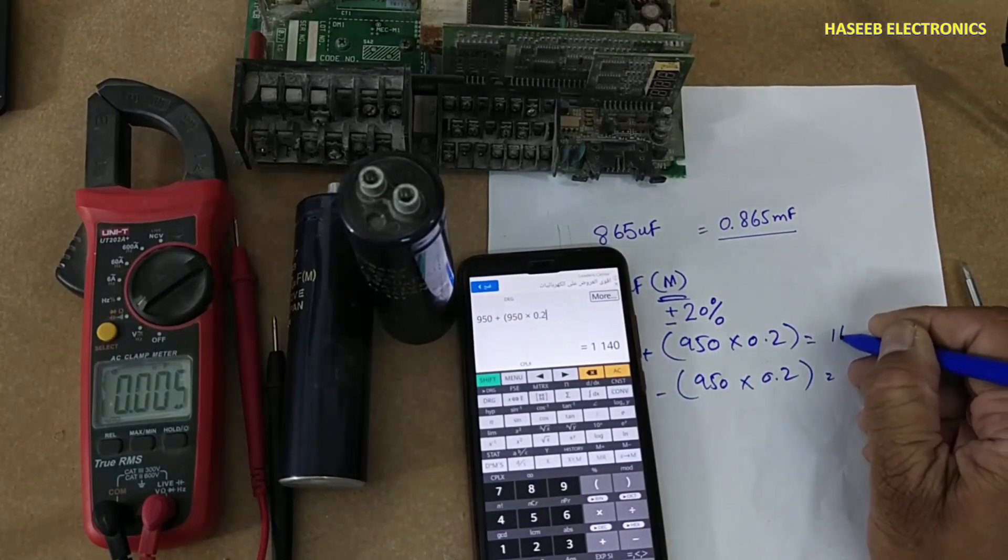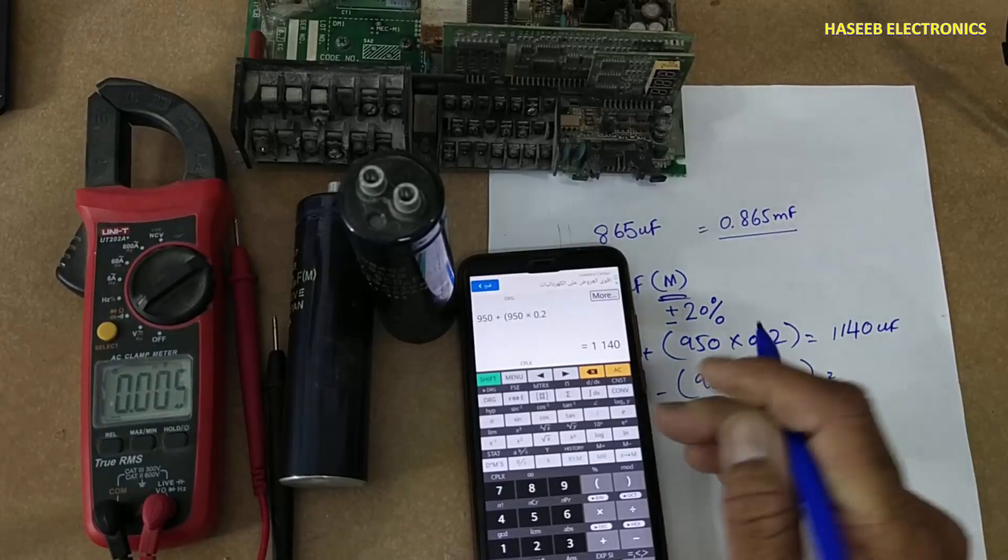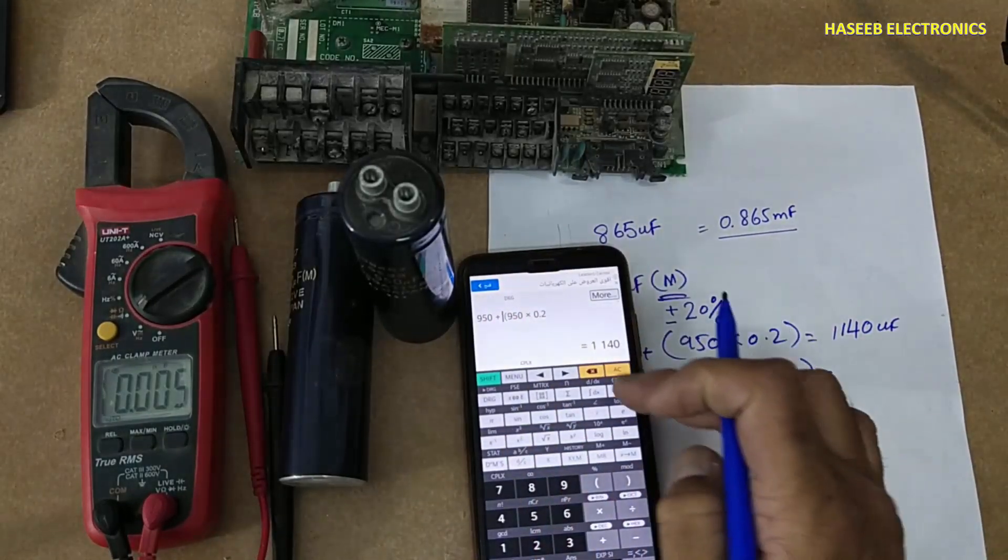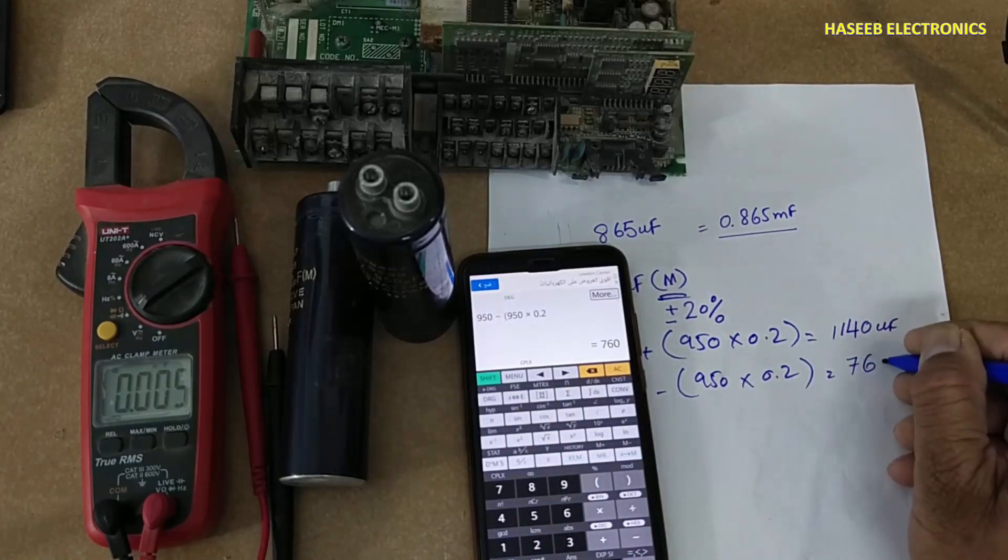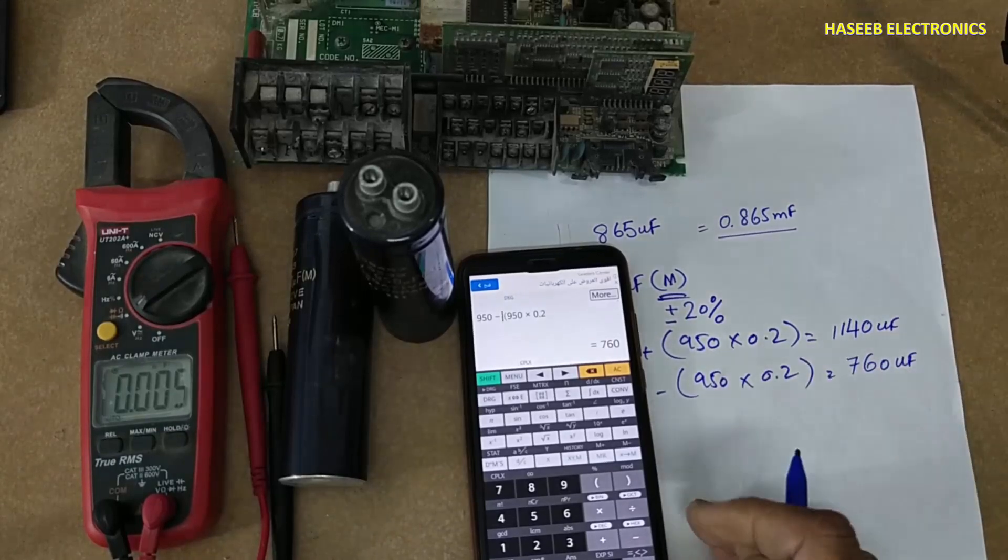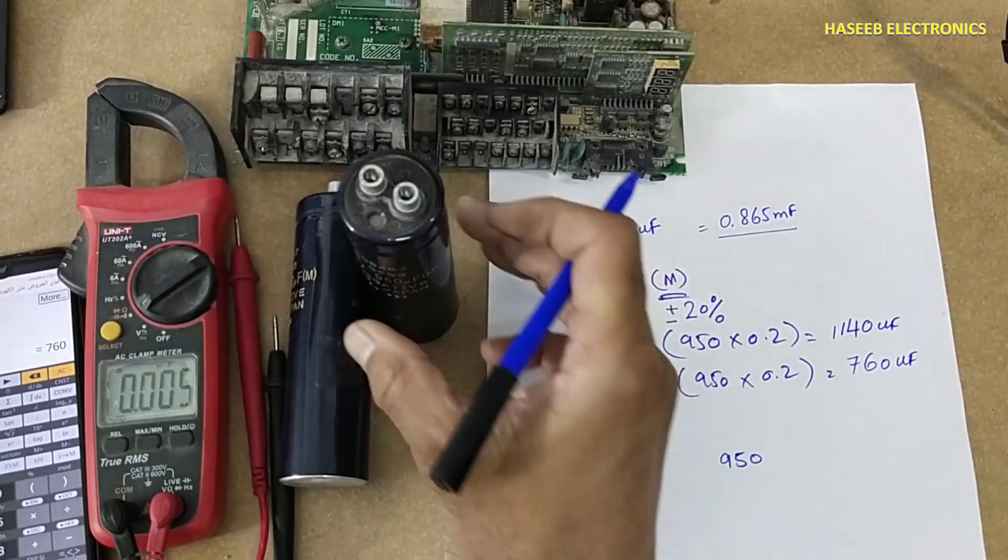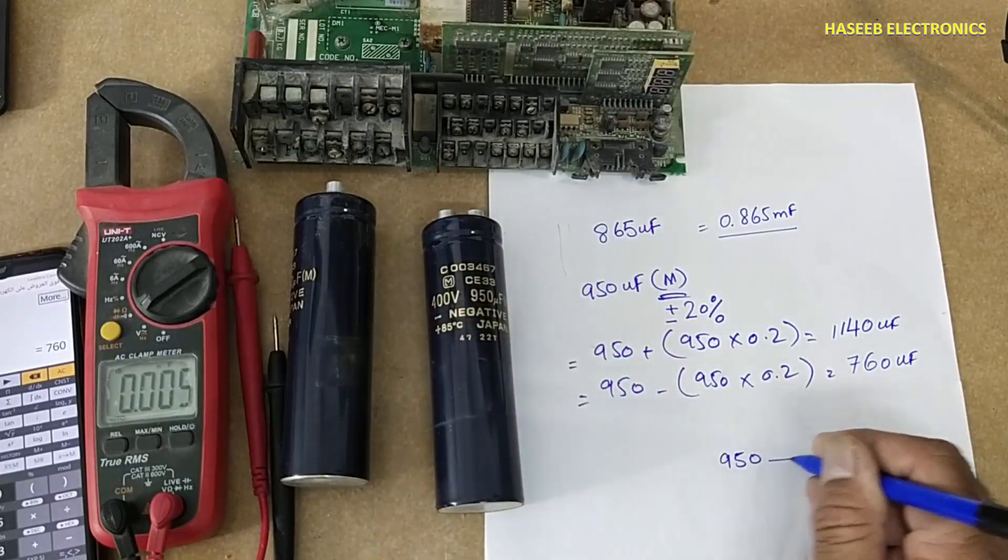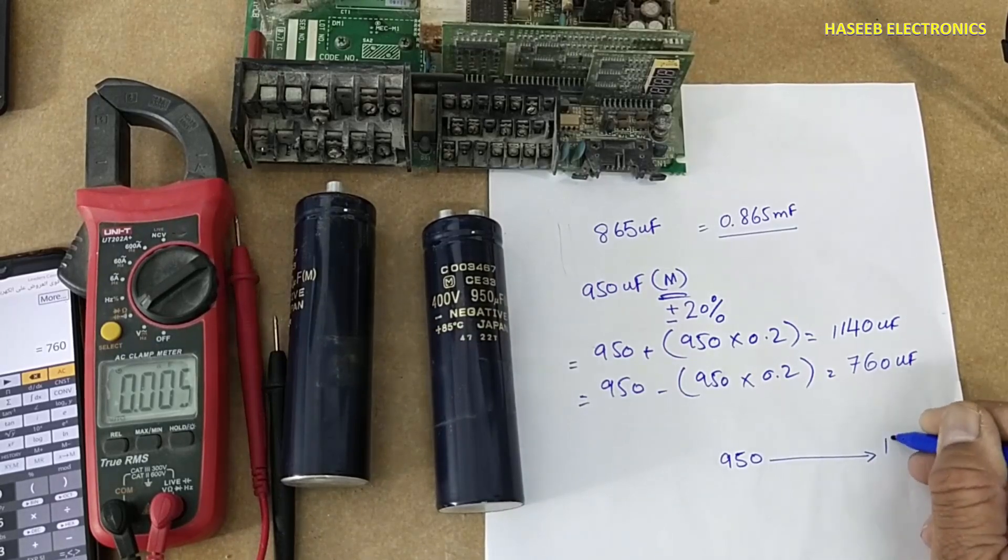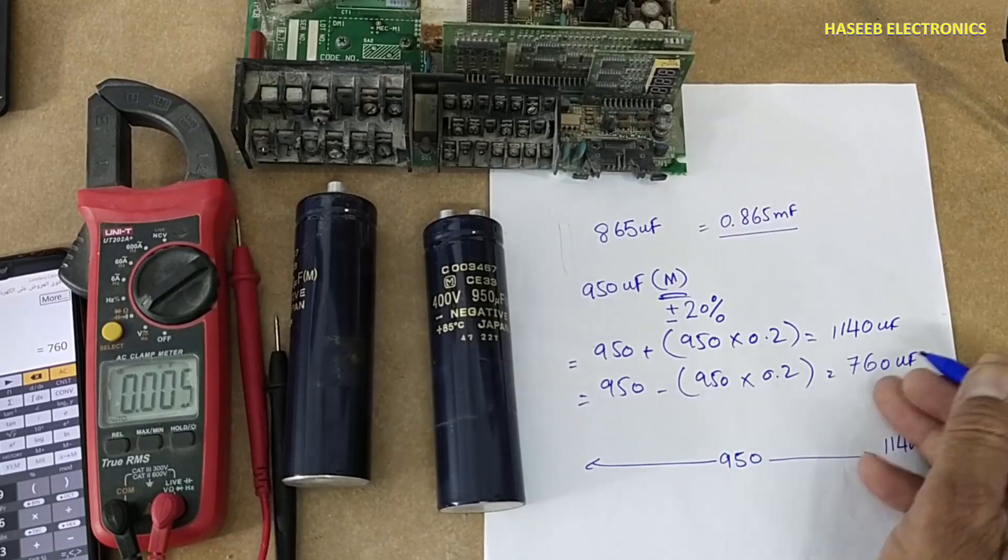1140, one thousand one hundred forty microfarad. And if you place minus here, it is 760 microfarad. Center value 950, that is the printed value, and its value may reach up to 1140 in the high side, 760 in the low side.